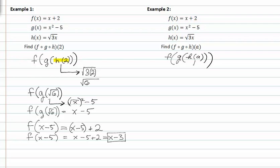Since h of a is in the very most inner set of parentheses, we can evaluate h of x where x is equal to a. This gives us h of a is equal to the square root of three times a.